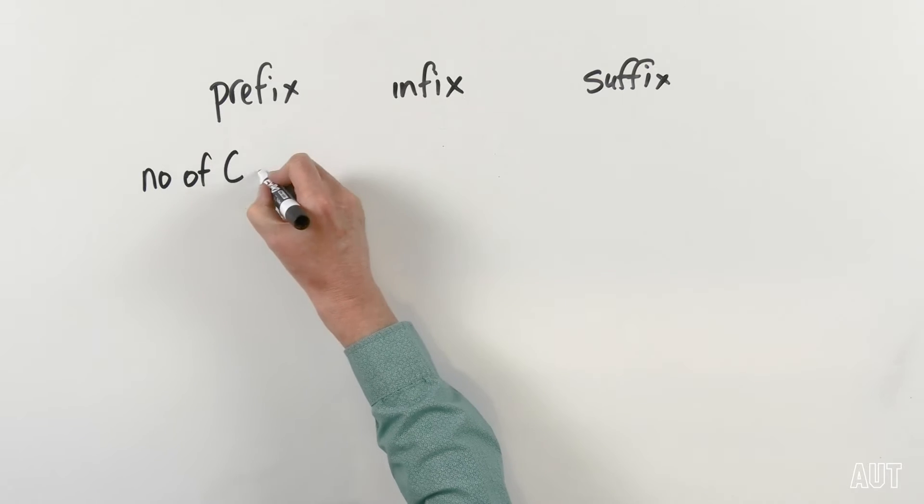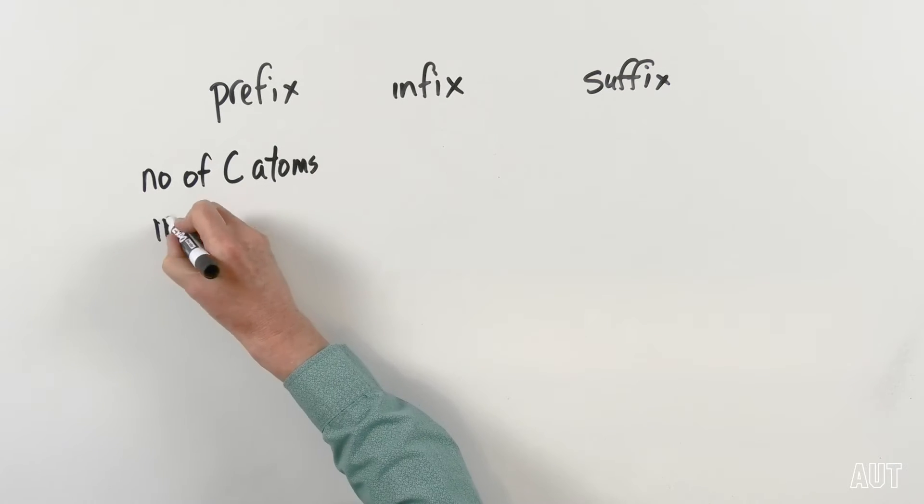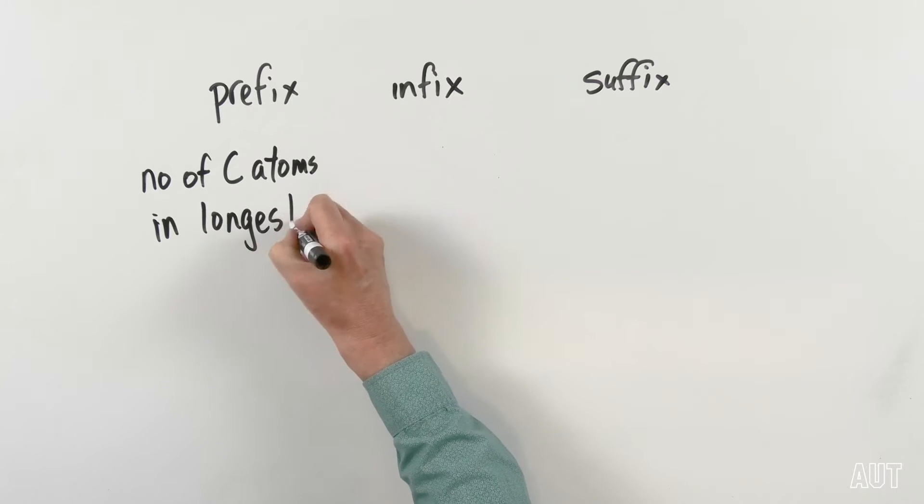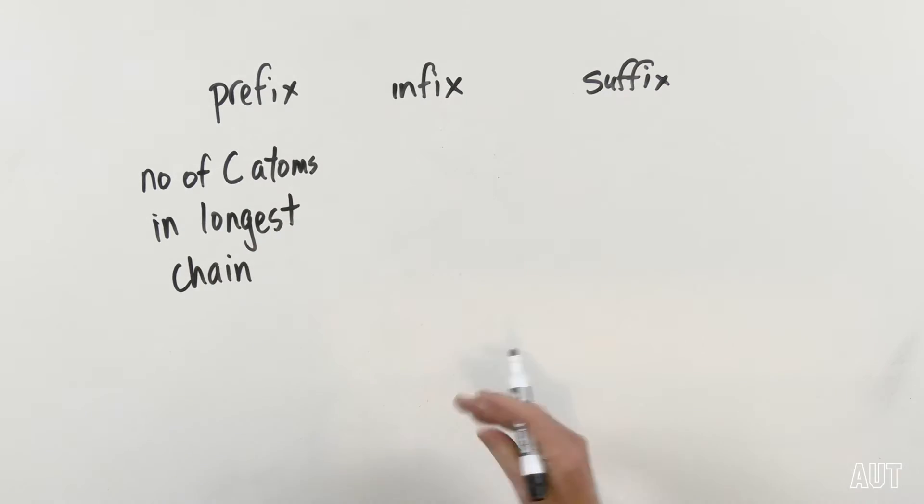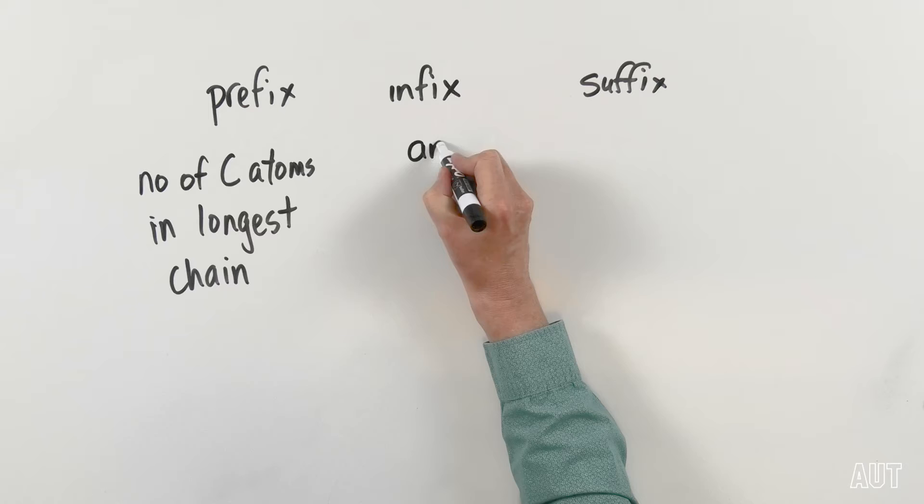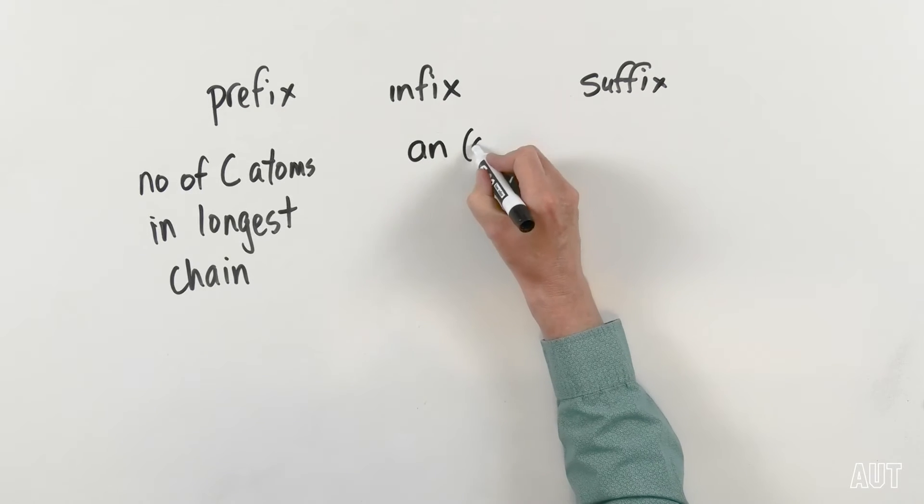So there's three parts to organic names, essentially. And the reason that we said there were only two was because we were only looking at alkanes there. The prefix signifies the number of carbon atoms in the longest chain. We've already seen that. So the prefix is your meth or your butyl or your non or your hex or whatever.